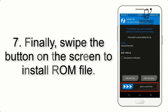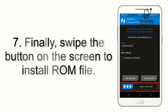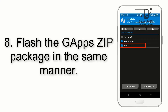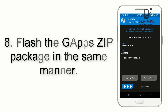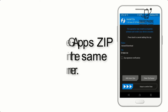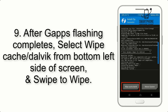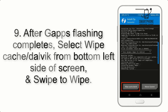Step 7: swipe the button on the screen to install the ROM file. Step 8: flash the GApps zip package in the same manner. Step 9: after GApps flashing completes, select Wipe Cache and Dalvik from the bottom left side of the screen and swipe to wipe.